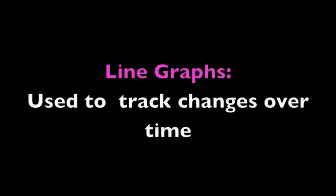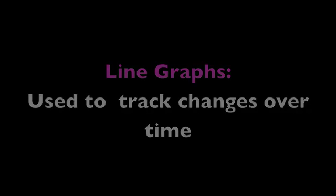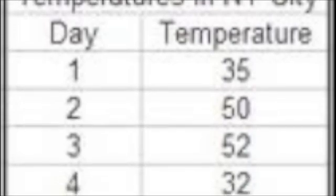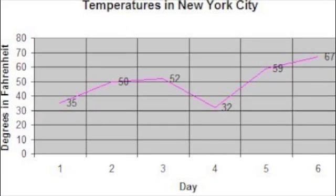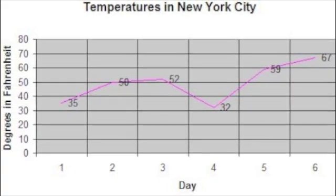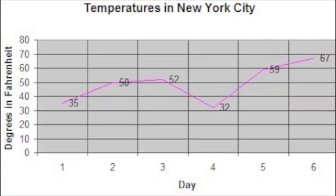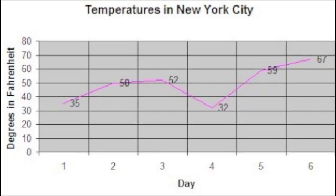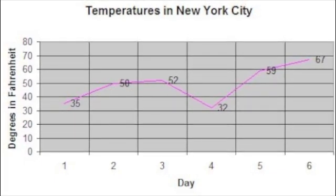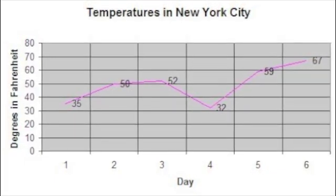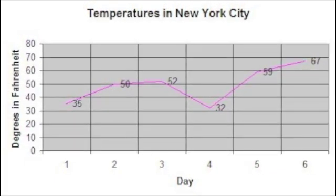The first type of graph is line graphs, which are used to track changes over time. Here we have a data table showing temperature in New York City over a six-day period. The line graph is best for this type of data table because we can clearly see how the temperature increased and decreased over the six-day period in one easy graph.